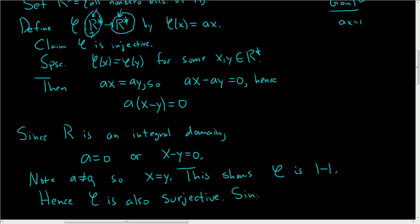Now since one is a nonzero element, it lives inside R star. And because φ is surjective, there exists an element x in R star such that φ(x) equals one.